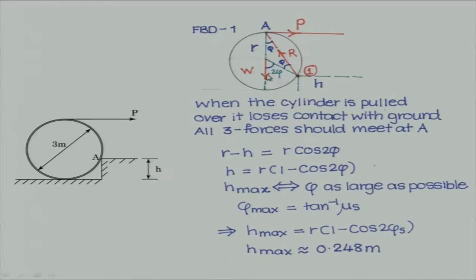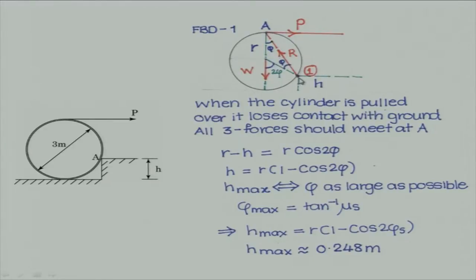That immediately tells you that as a function of height — if this angle is φ — note that this angle φ is the angle made by the effective force with respect to the normal. From this point, this is the normal. φ is the angle made by the total reaction at point A with respect to the normal. So φ can have a maximum value equal to φs, or tan inverse of μ. This is φ, this is φ, this will be 2φ, and what we know is that the height will be given by r times (1 minus cos 2φ), where r is the radius.